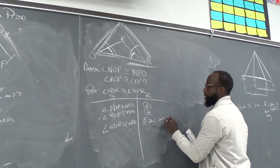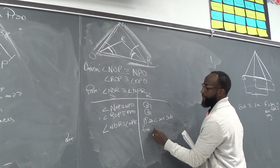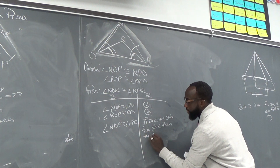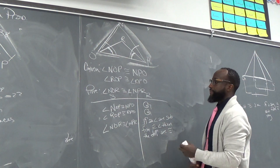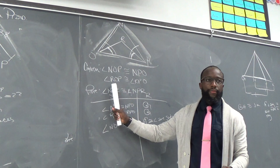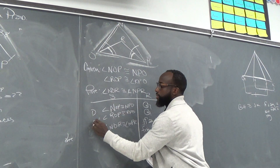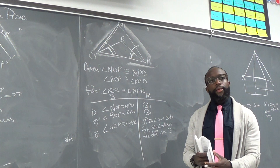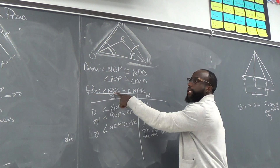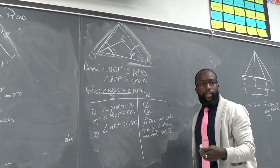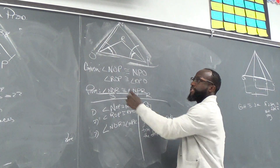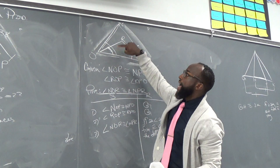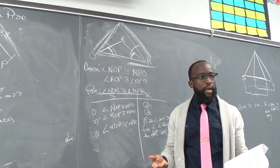If congruent angles are subtracted from congruent angles, then the differences are congruent. That's the three-step proof. You look at what they're giving and what they want you to prove. They want us to prove that a smaller angle is congruent. If it were the other way around — if they want us to prove the big angle is congruent — then that would be a result of adding the two angles together, so that's when you would use the addition property.